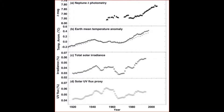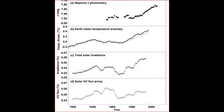In our next chart we are going to compare the brightening of Neptune with the climate changes on Earth, or global warming if you like, which has traced a similar pattern: warming 1920 to 1940, then levelling off or cooling to 1975, and then an increase up to 2000 — or 2002 in the case of Neptune. This also correlates with total solar irradiance and the UV flux proxy.